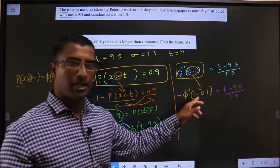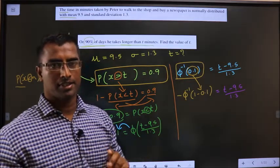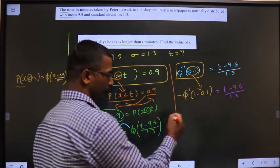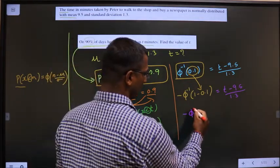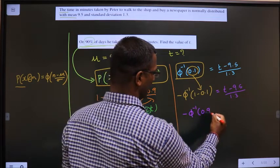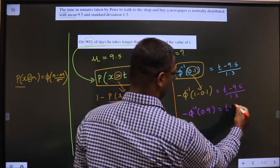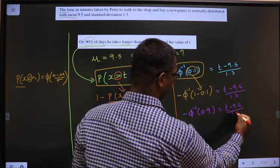Inside you are doing 1 minus, outside put the negative sign. Now, so this is minus phi inverse of 0.9 equal to T minus 9.5 by 1.3.